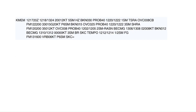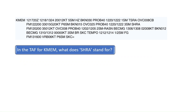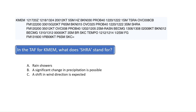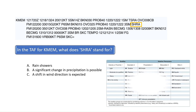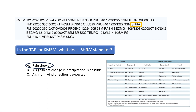In the TAF for KMEM, what do the letters SHRA stand for? The letters SH stand for showers and the letters RA stand for rain. See the key at the bottom right to know the letter codes for each weather system in a TAF. Since the letters SHRA are preceded by the number 3 followed by the letters SM, this report would indicate to a pilot that there will be 3 miles of visibility in rain showers. The correct answer is A.